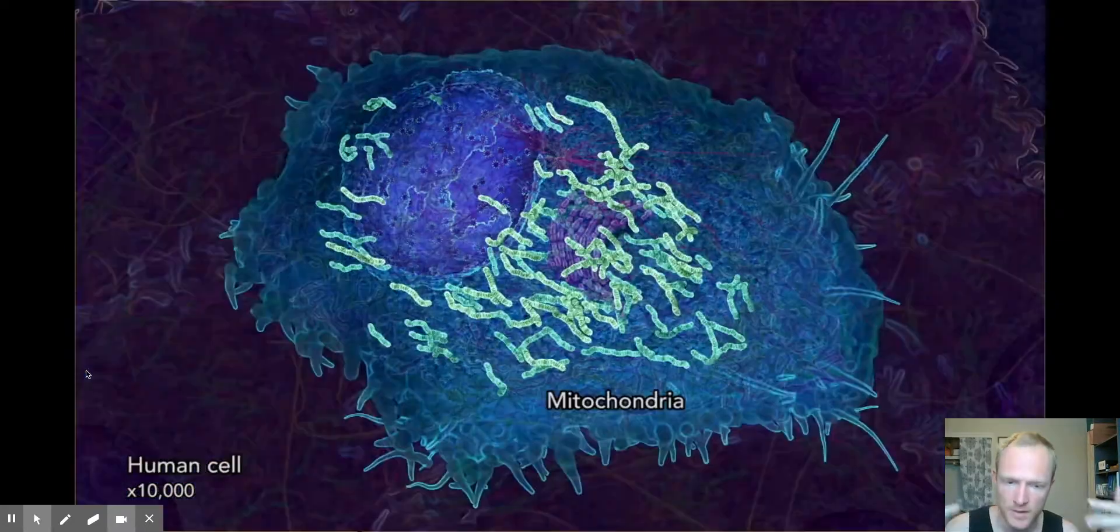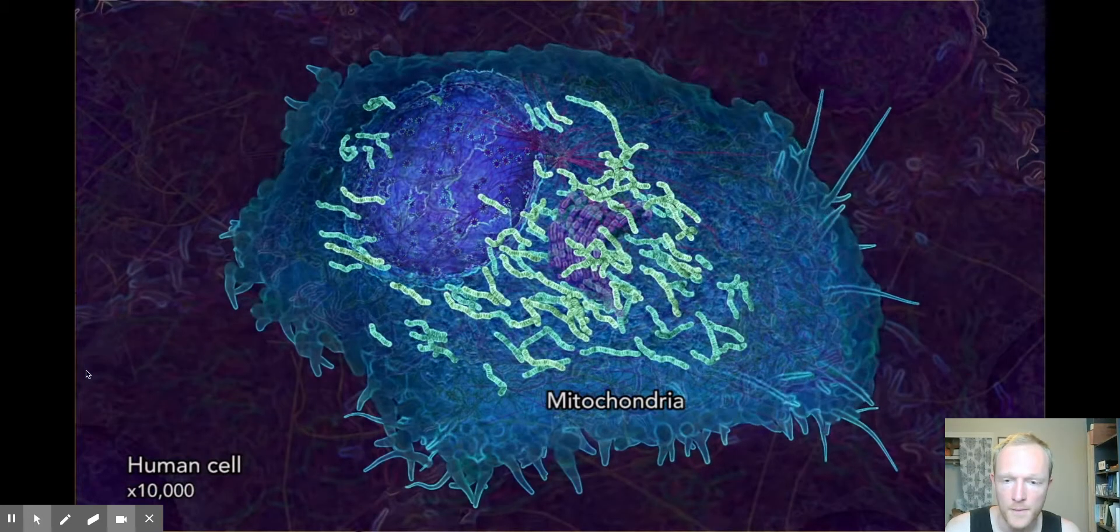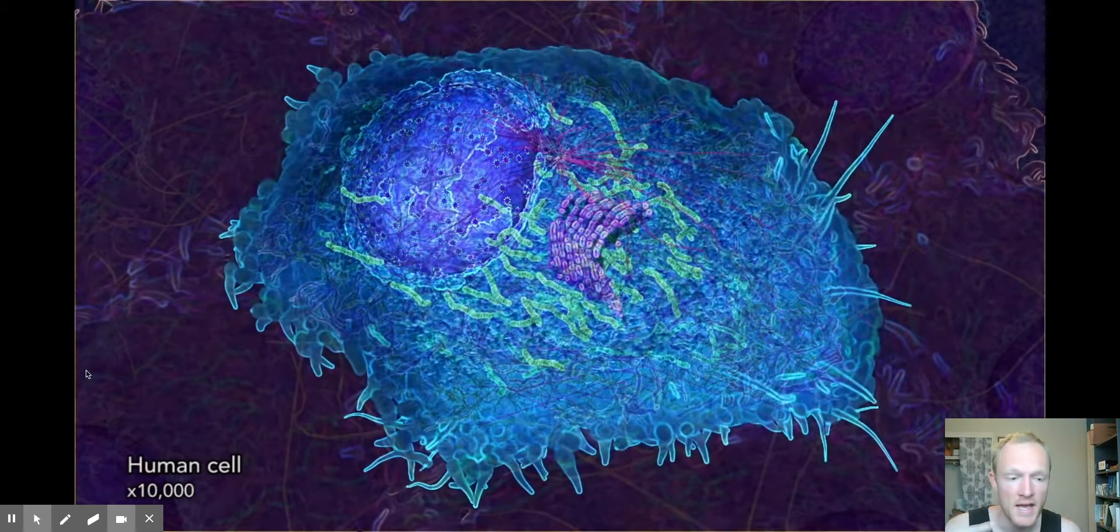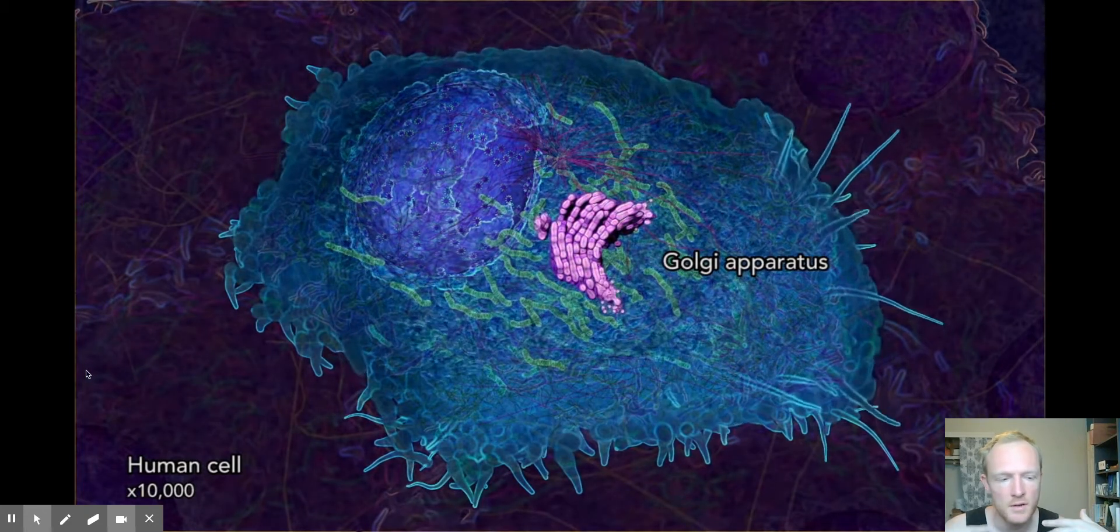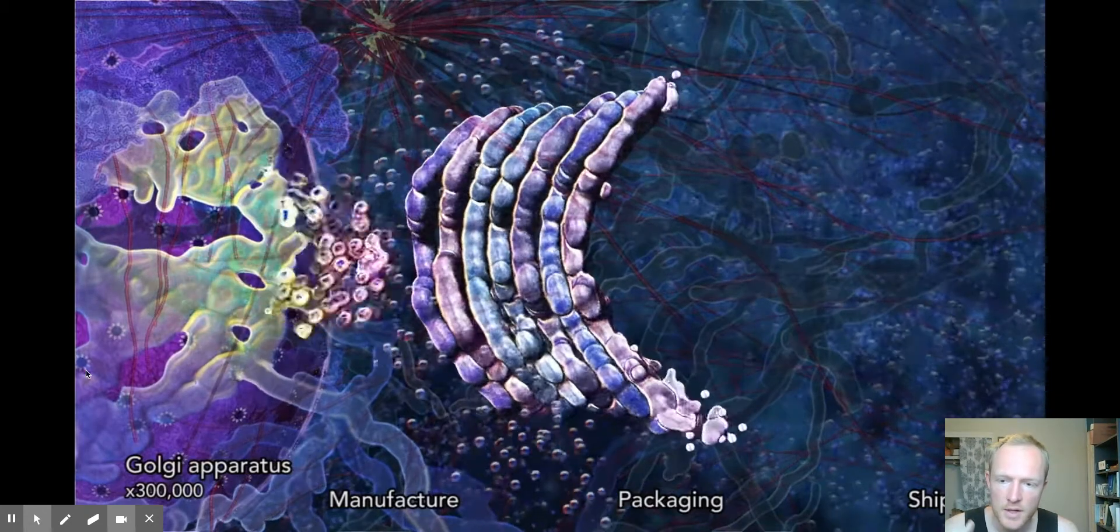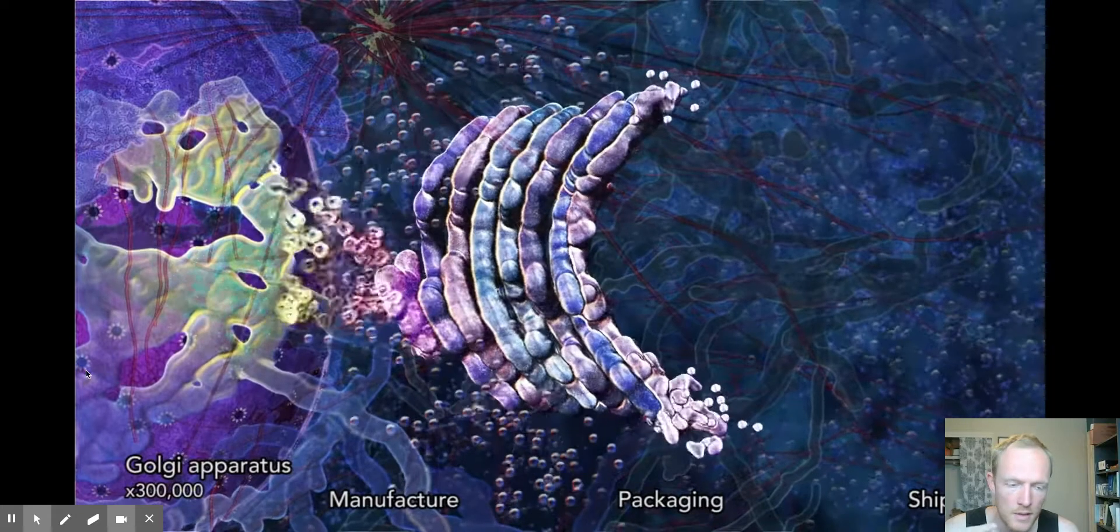Muscle cells, high activity cells, neuron cells have a lot of mitochondria in response to their energy needs. So coming off of the nucleus and the mitochondria and the endoplasmic reticulum are proteins.